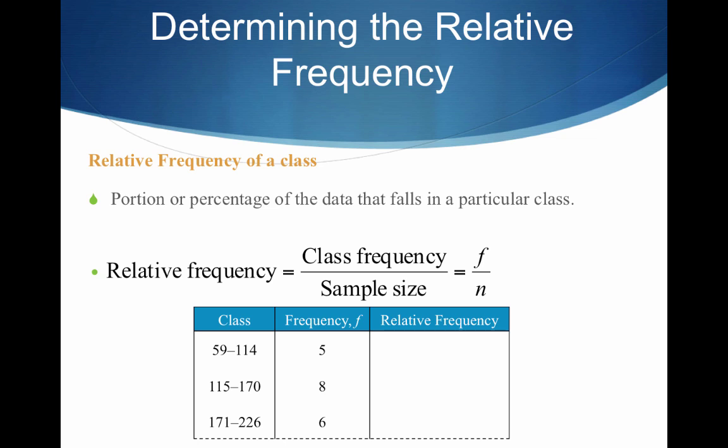What about the relative frequency of a class? Relative frequency is the percentage of the data that falls in a particular class. For each class, take the frequency and divide it by the sample size. With 30 GPS navigators, the first class has 5 divided by 30, which is approximately 0.17, meaning 17% of the GPS navigators are priced between $59 and $114. The next class has 8 divided by 30, or about 27%, priced between $115 and $170.